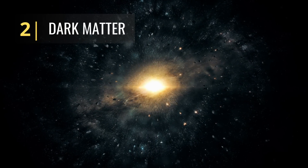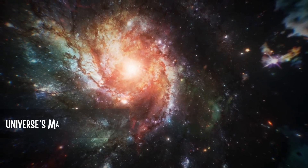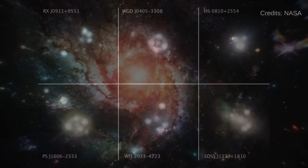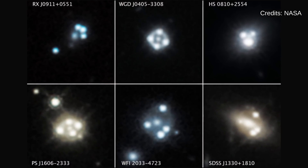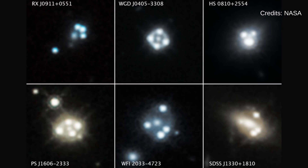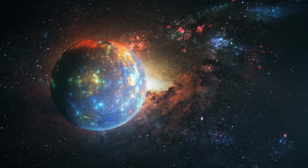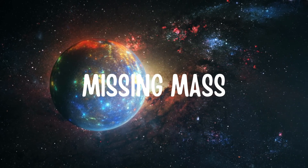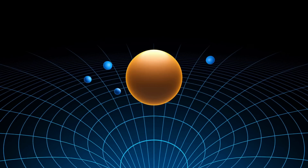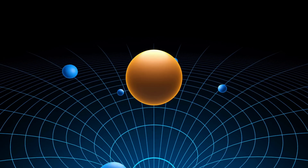Now let's move on to a mysterious and invisible form of matter known as dark matter. Scientists estimate that dark matter constitutes around 27 percent of the universe's mass. Dark matter first gained attention as the missing mass responsible for the formation and evolution of galaxies, stars, and planets. It is believed to exert gravitational forces affecting the movements of celestial objects within galaxies.